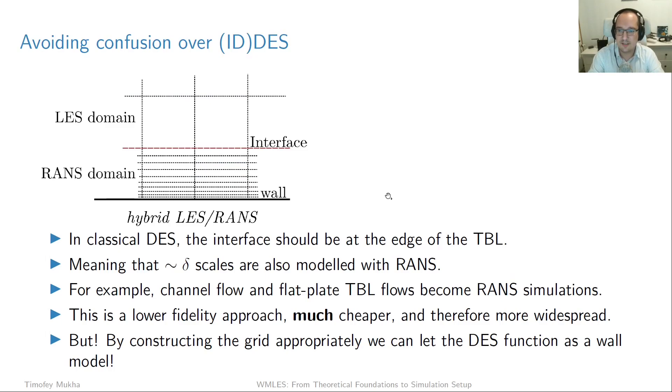Now, it's very easy to get confused about detached eddy simulation and how it fits into the wall modeling framework. So I would like to speak about that a little bit so that no confusion is introduced here. So what's important to understand is that in classical DES, the location of the interface is at the edge of a turbulent boundary layer, okay? So what that means is that the whole boundary layer is modeled with RANS. In other words, the turbulent scales of a size delta are not resolved, but are modeled with RANS. So this is not wall modeled LES, right? Because in wall modeled LES, we commit to resolving these scales.